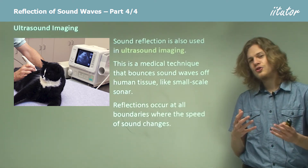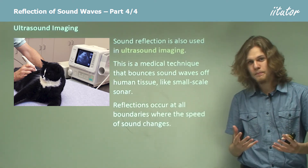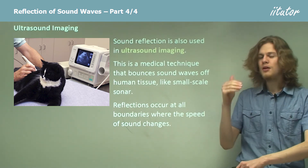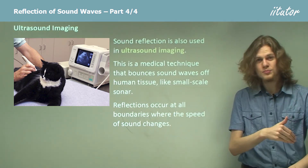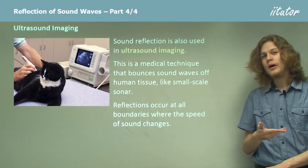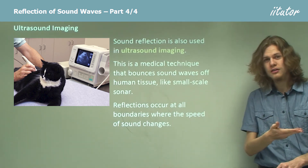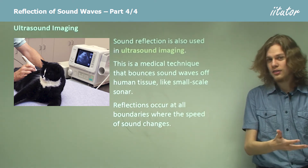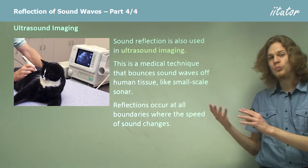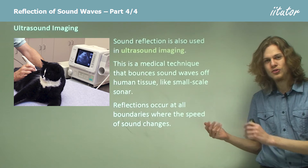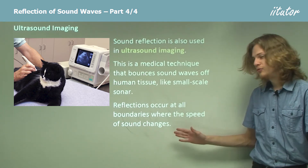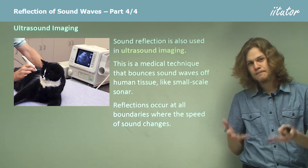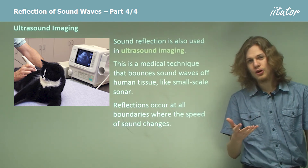Reflections occur at all changes in medium. When an ultrasound pulse is sent through the skin, part of it bounces off the skin and part is transmitted. Part will then bounce off blood vessels underneath and part will be transmitted further. Finally, some will bounce off the bone beneath that. Because of this, we're able to build up an image of the layers underneath the skin of the body.